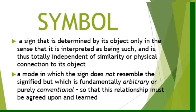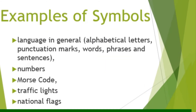A symbol is a sign that is determined by its object only in the sense that it is interpreted as being such, and is thus totally independent of similarity or physical connection to its object. In other words, a symbol is the mode in which the sign does not resemble the signified but which is fundamentally arbitrary or purely conventional, so that this relationship between the sign and the objects must be agreed upon and learned. Common examples of symbols are language in general, numbers, Morse code, traffic lights, and national flags.